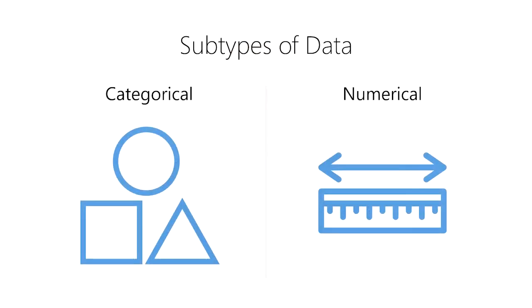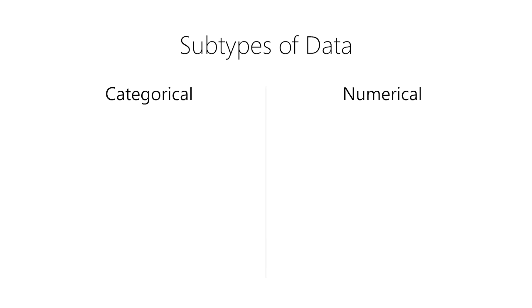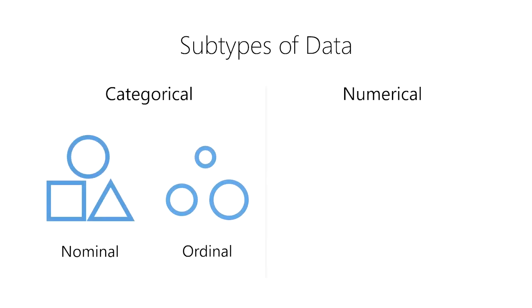Categorical and numerical data can be further subdivided into four subtypes. Categorical data can be divided into nominal and ordinal data, and numerical data can be divided into interval and ratio data. We'll take a look at each of these four subtypes of data next.